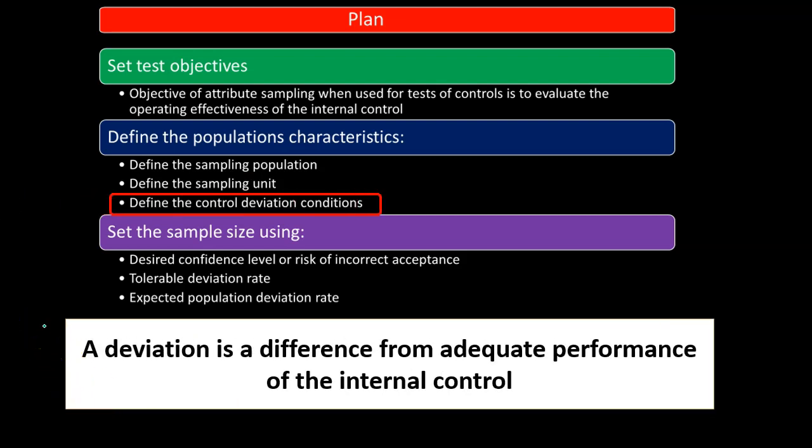Defining the control deviation condition: a deviation is a difference from the adequate performance of the internal control. For example, if we look at a document and expect to find initials indicating verification but don't find them, that would be a deviation. This doesn't mean the whole population is wrong, because depending on the type of controls, we may expect some deviation. We're testing the amount of deviation within the sample and applying that to the entire population.